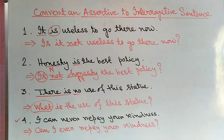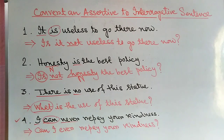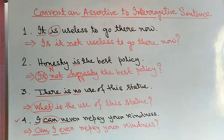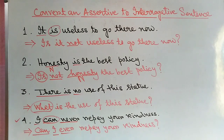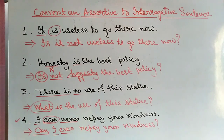Example: 'I can never repay your kindness.' Here 'never' is a negative word. Converting to interrogative: 'Can I ever repay your kindness?' — this is the interrogative form.